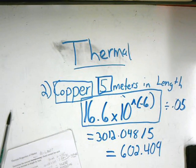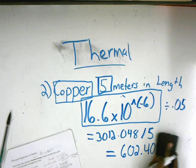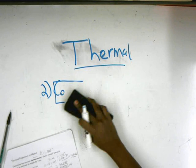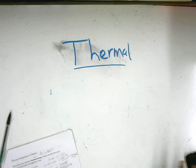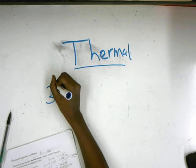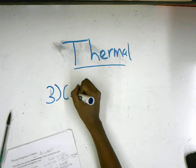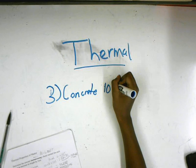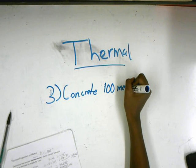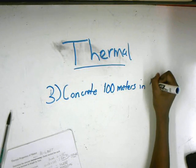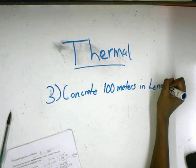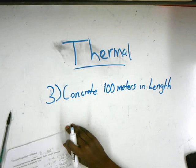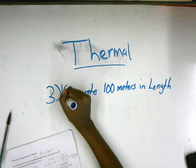Now for concrete. It's 100 meters in length. You would take, then, what concrete is, which is 14.5 times 10 to the negative 6.